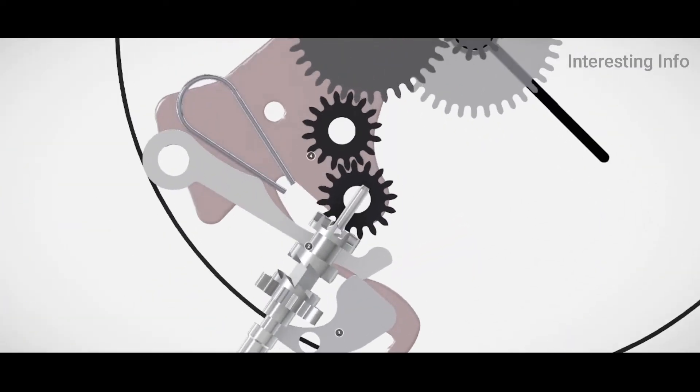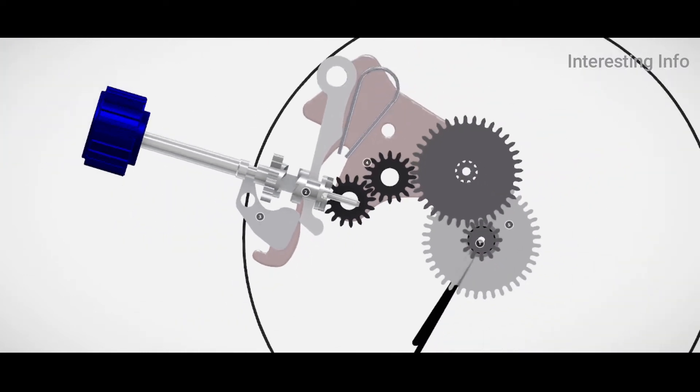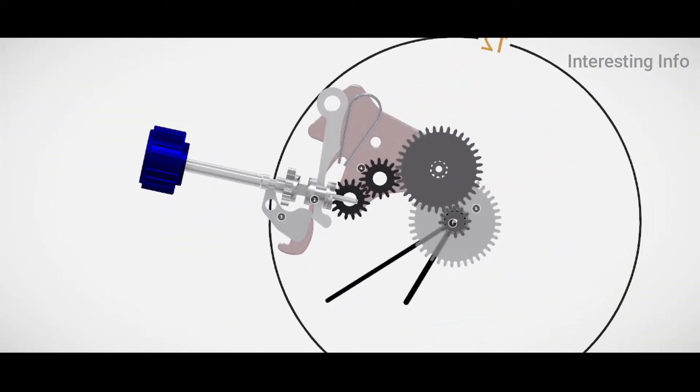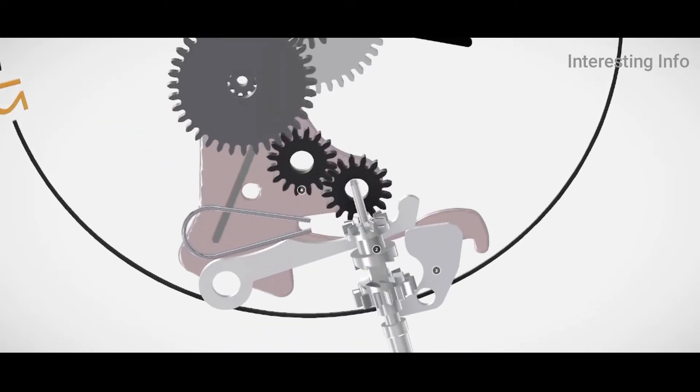Cannon Pinion is the heart of the motion works. This piece is what translates the movement of the train wheels into the timekeeping display on dial side. It is attached to the center wheel by friction fit, and it is the post that the minute hand is set on.